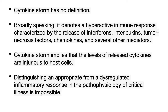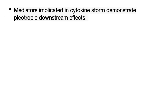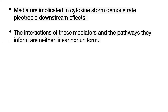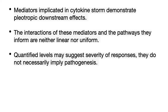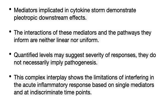It is very difficult to know when the protective immune response becomes dysregulated and starts harming our body. Mediators implicated in the cytokine storm demonstrate a pleiotropic downstream effect. The interaction with these mediators and the pathways they inform are neither linear nor uniform. The quantified levels may suggest severity of the response, but they do not necessarily imply a pathogenesis. This complex interplay shows the limitation of interfering in the acute inflammatory response based on single mediators and at discriminated time points.